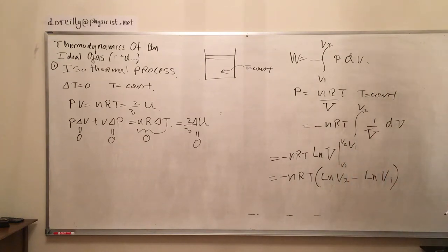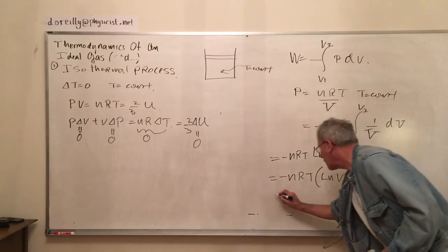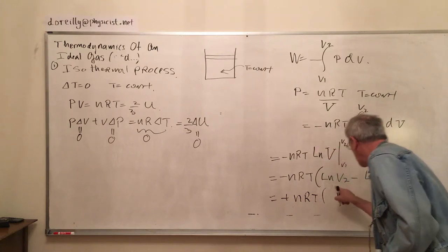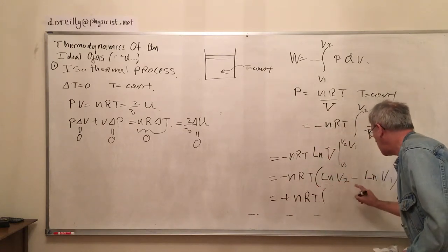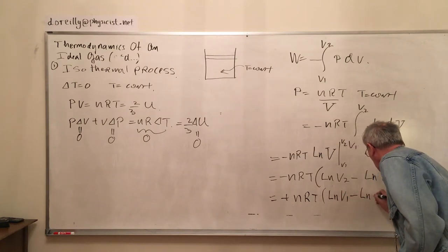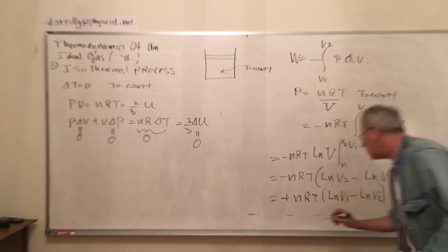So I get the integral, bringing the constants out, of 1 over V dV, and of course that's a logarithmic integral, which is nRT with a negative sign, ends up ln(V2) minus ln(V1). So I just swap the two terms by removing the bracket or bringing this sign in here.